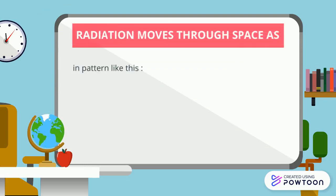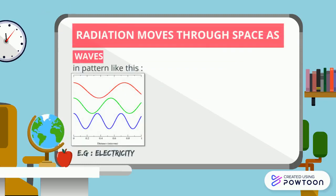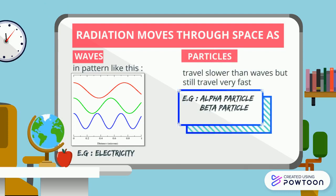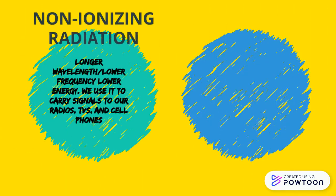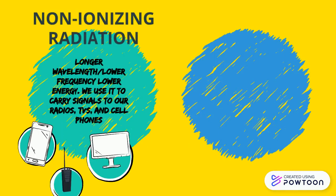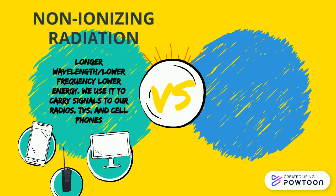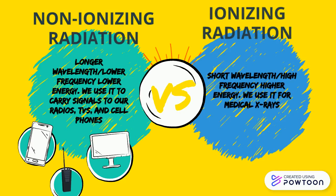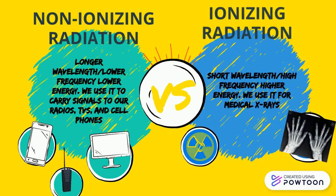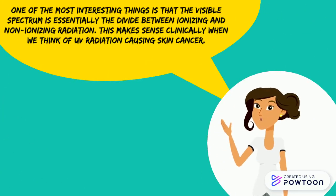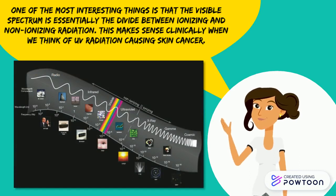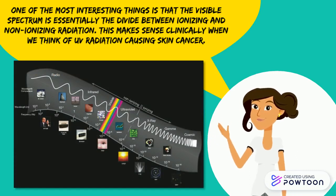Radiation moves through space as waves and particles. Non-ionizing radiation has longer wavelength and lower frequency with lower energy, while ionizing radiation has short wavelength with high frequency and higher energy. One of the most interesting things is that the visible spectrum is essentially the divide between ionizing and non-ionizing radiation.